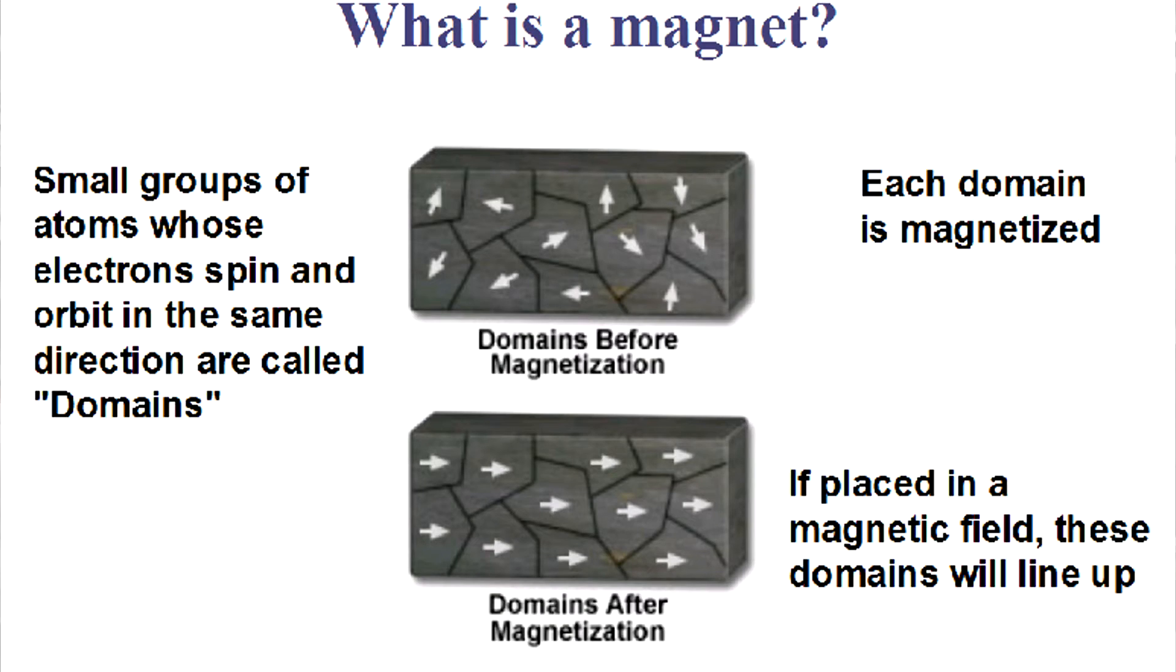By putting it in a larger magnetic field, you can get those domains to line up with each other. And at the same time, by doing that, they're lining up with the external magnetic field. And if you bring all those domains into alignment, you have what is commonly known as a magnet.